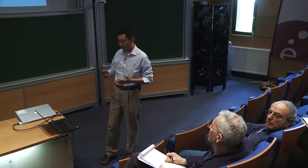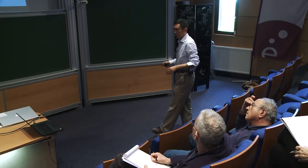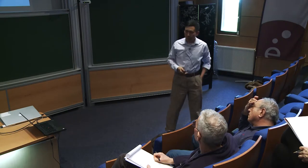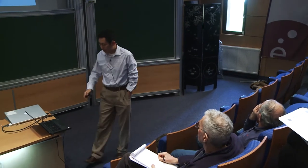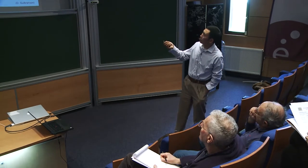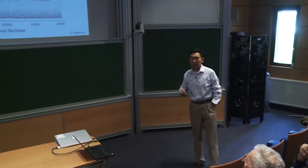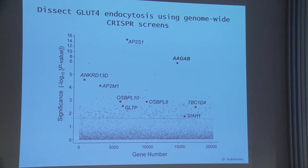Here we performed a similar screen with an important difference: we didn't treat the cells with insulin. We sorted for cells with high GLUT4 reporter on the plasma membrane without stimulation — to recover mutant cells defective in endocytosis. The screen recovered known regulators of endocytosis such as AP2 adapter subunits, and TBC1D4 is actually an inhibitor for exocytosis. Not only did the screen recover endocytic regulators, it also recovered inhibitors of exocytosis. Most of the genes were not previously known to be involved in GLUT4 endocytosis.